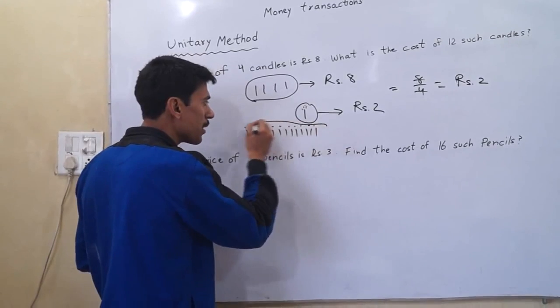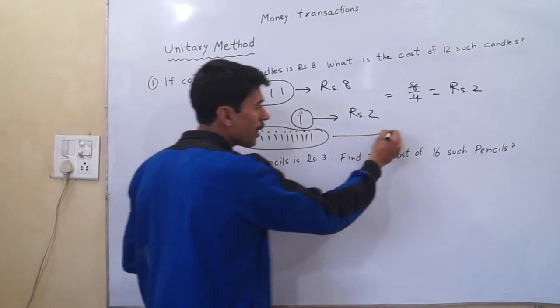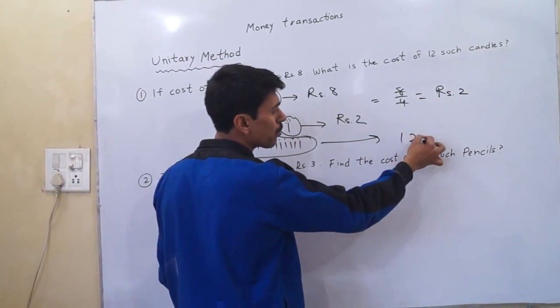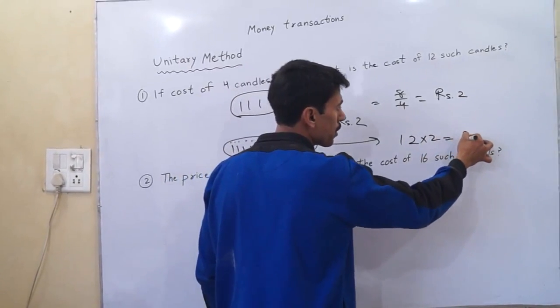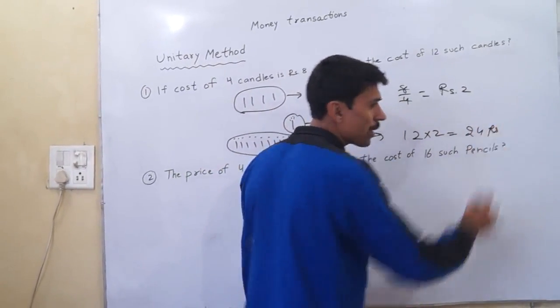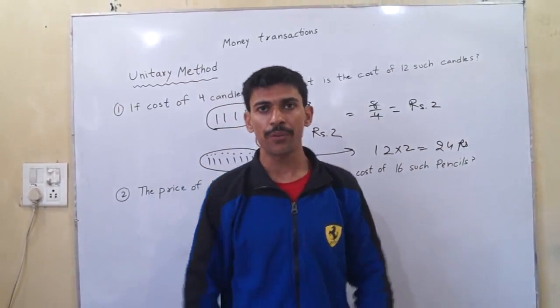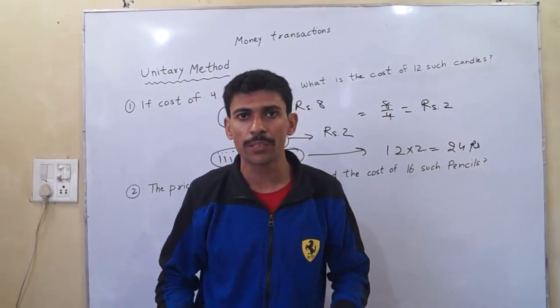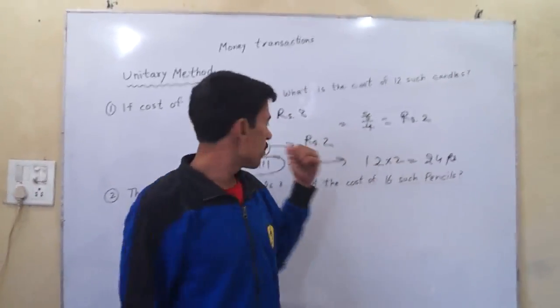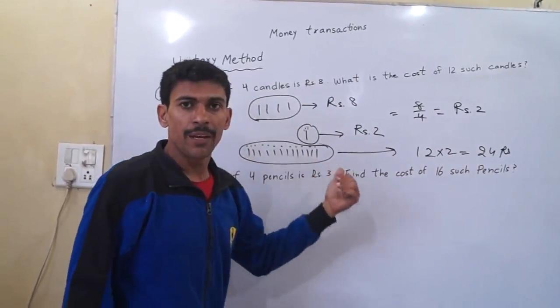If I need these candles, I have to multiply 12 into 2, equals 24. I have to pay 24 rupees. If I have the money of 24 rupees, I can buy the twelve candles.